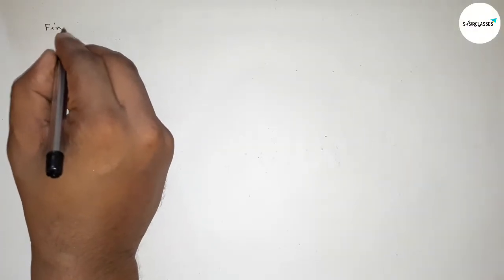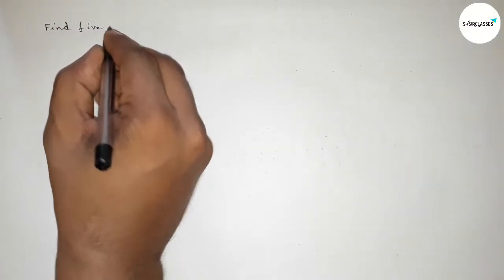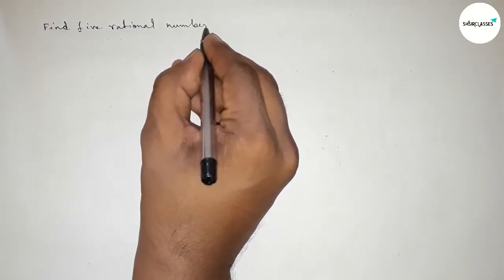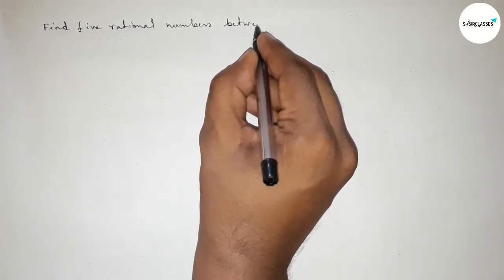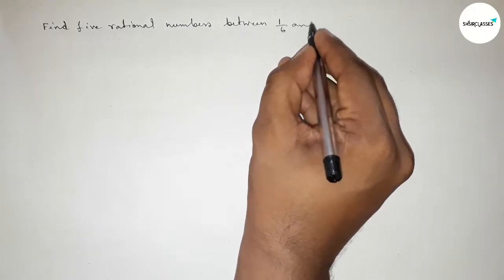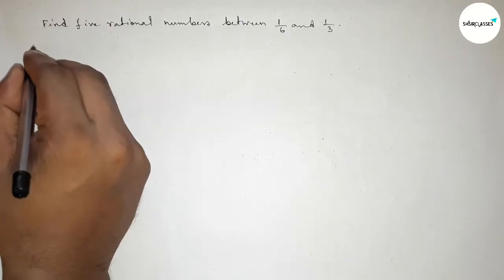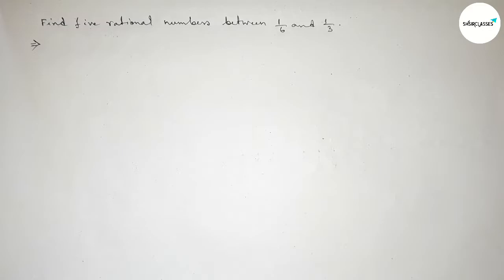Hi everyone, welcome to SI Share Classes. Today in this video we have to find out five rational numbers between 1 over 6 and 1 over 3. So let's start the video. First of all, let's solve this problem.